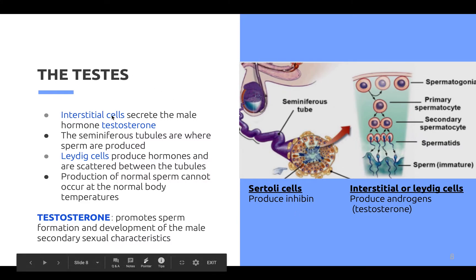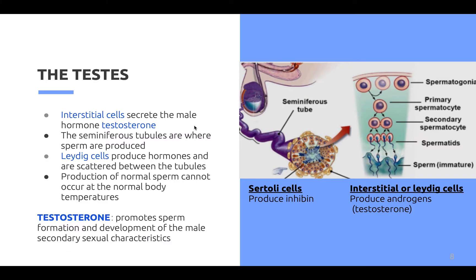Interstitial cells secrete the male hormone testosterone. The seminiferous tubules are where sperm are produced. Interstitial cells produce hormones such as testosterone and are scattered between the tubules. Production of normal sperm cannot occur at normal body temperature, which is around 37 degrees. Testosterone promotes sperm formation and development of the male secondary sex characteristics, which will be discussed in the puberty section.